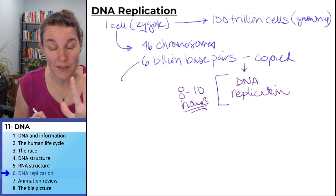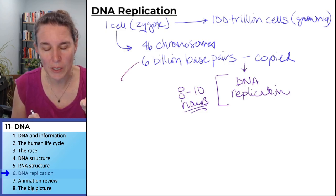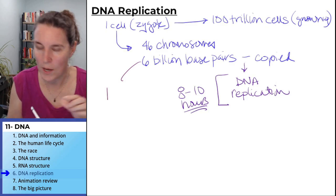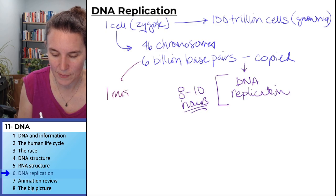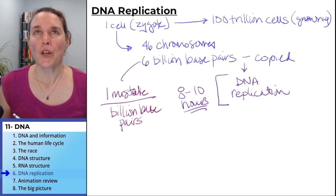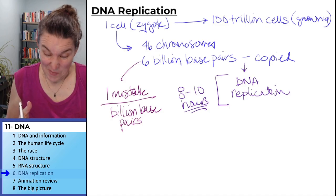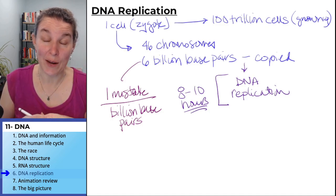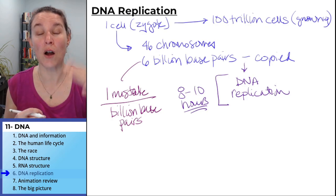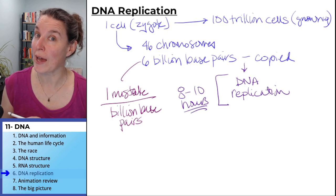Your cells, the process of DNA replication makes about one mistake, one mistake per billion base pairs. So that means every time we copy our DNA, we're going to have six base pairs that are different from what we had in the beginning.